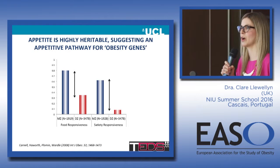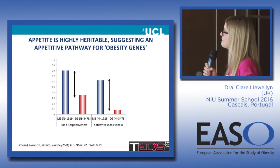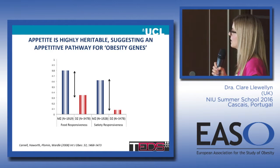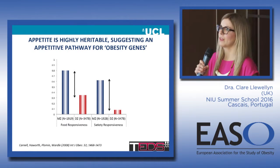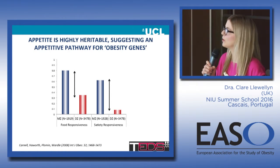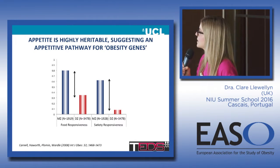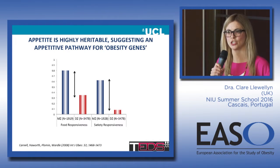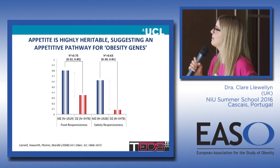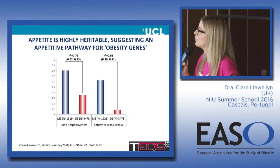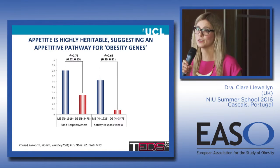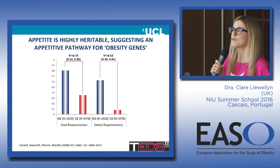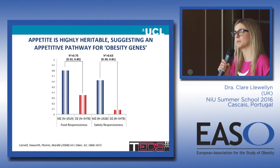Because they were twins, Susan Carnell and Jane Wardle were also able to establish the heritability of these traits by comparing how similar identical twins were with how similar non-identical twins were. The identical twin correlation for food responsiveness is much higher than the non-identical twin correlation, and similarly for satiety responsiveness, indicating a strong genetic contribution. Modelled heritability was high — 75 percent of individual differences in food responsiveness and 63 percent of individual differences in satiety sensitivity were explained by genetic variation.